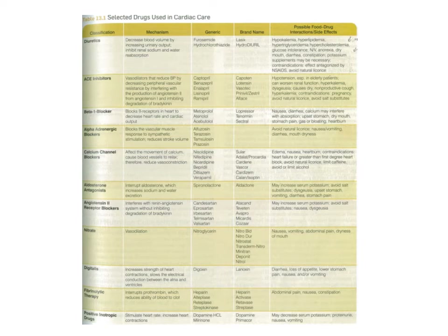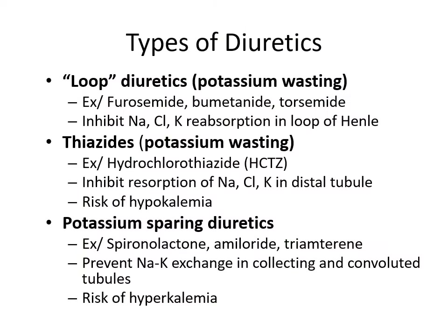Here you can see a larger category of drugs and different brand names. Going into more detail on diuretics: loop diuretics or potassium-wasting diuretics — like furosemide — inhibit sodium, chloride, and potassium reabsorption in the loop of Henle. Thiazides — like hydrochlorothiazide or HCTZ — are also potassium-wasting and inhibit resorption in the distal tubule, and contribute to a risk of hypokalemia. Potassium-sparing diuretics — like spironolactone — prevent the sodium-potassium exchange in the collecting and convoluted tubules, but carry the risk of hyperkalemia.